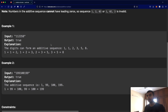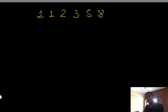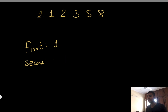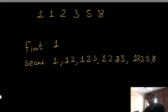The only hard part of this question is understanding that you don't know what the first and the second number are. Let's say the first number is one — the second number could also be one, it could be 12, it could be 123, it could be 1235, or it could be 12358. These are all possibilities we could have.